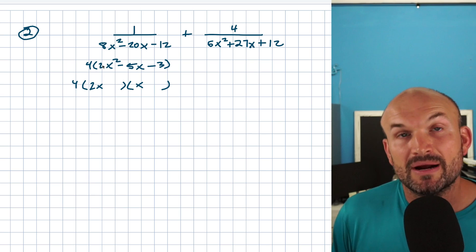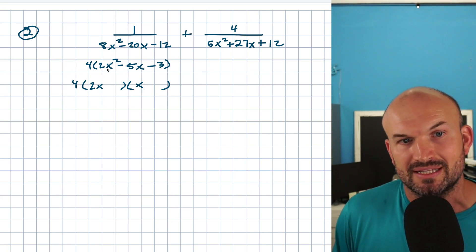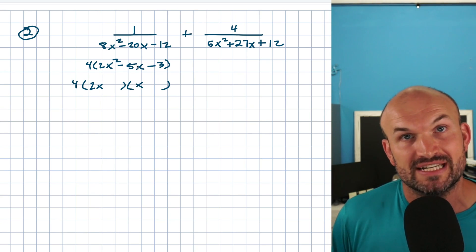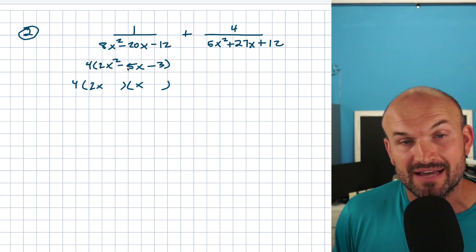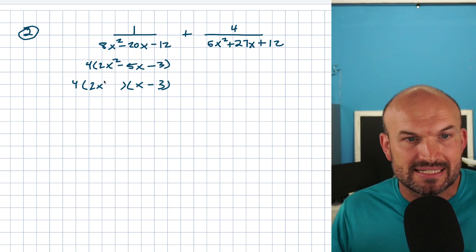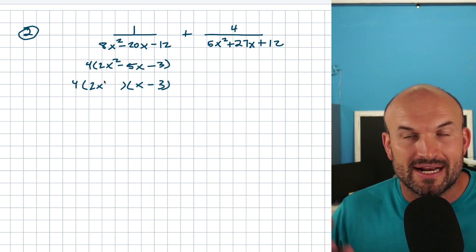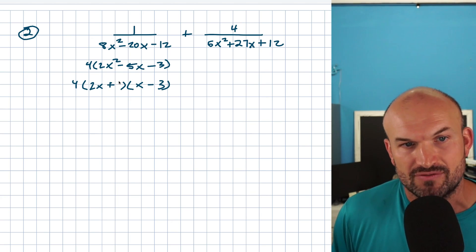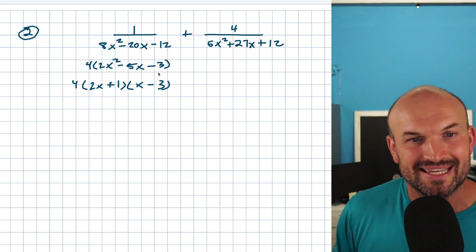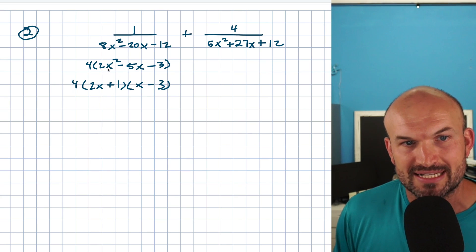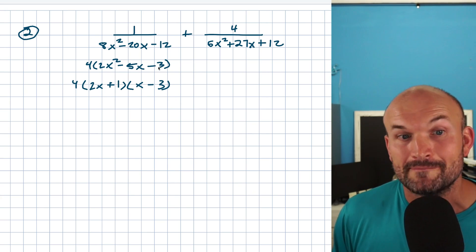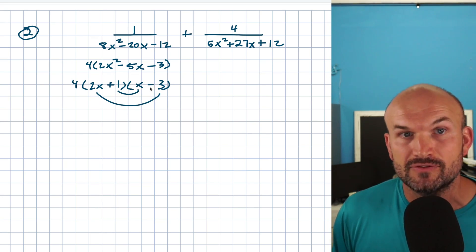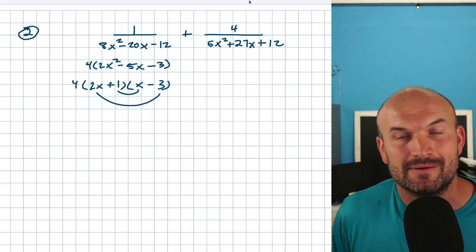I need to find the factors for negative 3. Since the last term is negative, I'm looking for the difference of the factors. The factors of 3 are 3 and 1, which have a difference of 2. But those numbers are going to be multiplied by the leading coefficient of 2. So 2 times 3 gives me 6, and 6 minus 1 gives a difference of 5. I need this difference to be negative 5, so I want negative 3 here. Let me double check: 2x times x is 2x², 1 times negative 3 is negative 3, and the middle terms — 1 times x is x, and 2x times negative 3 is negative 6x — so x minus 6x gives negative 5x. Practice really makes perfect in this.